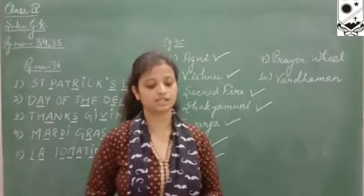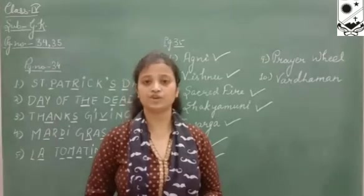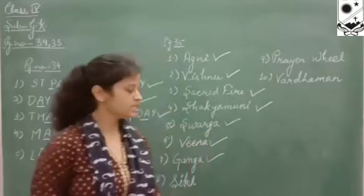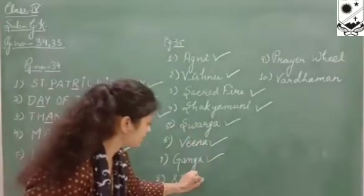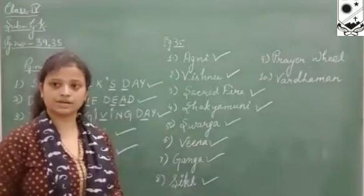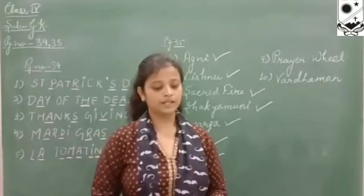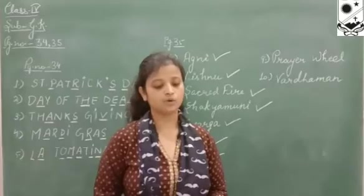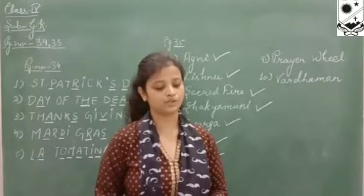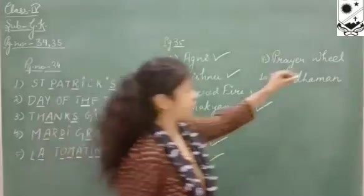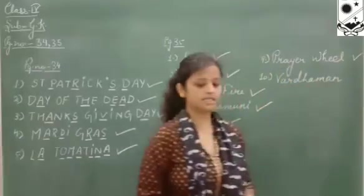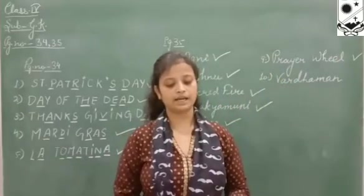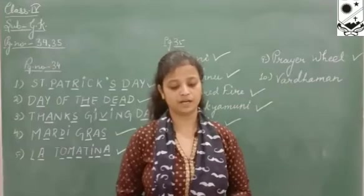The eighth description: the religion in which it is important for a man to wear a turban is the Sikh religion. The ninth description: something turned round and round by Buddhists for praying is the prayer wheel.